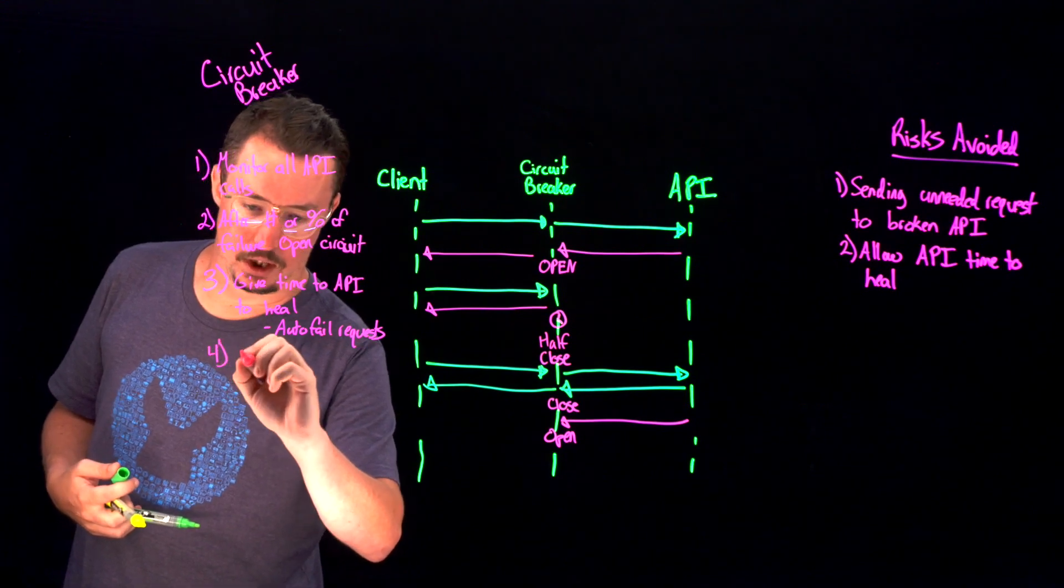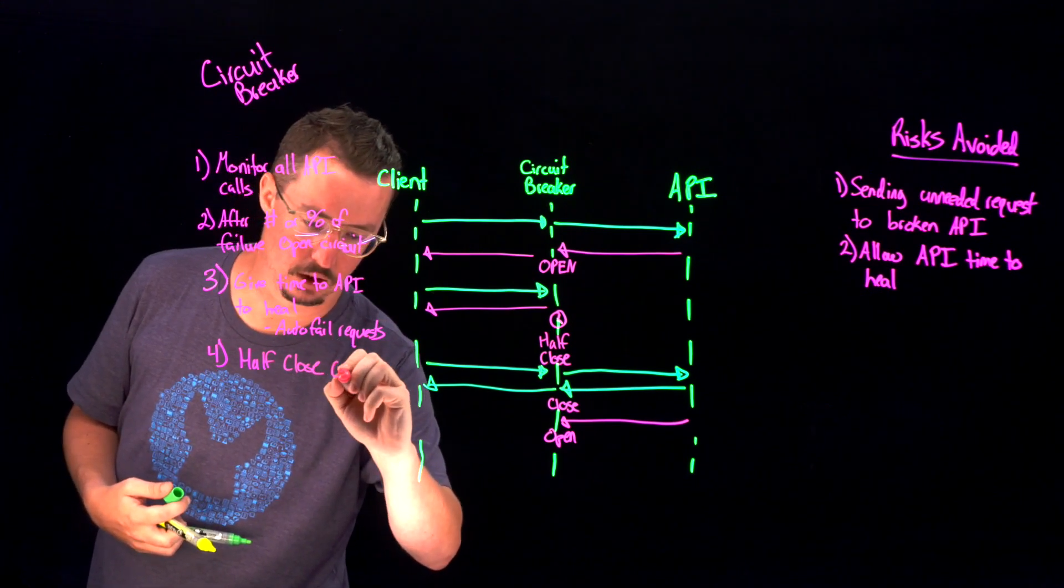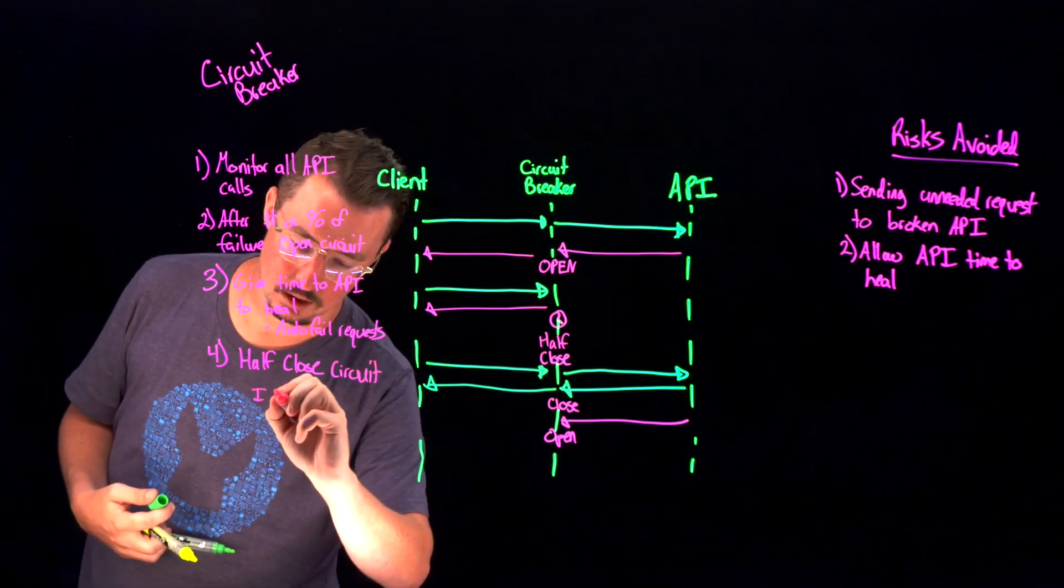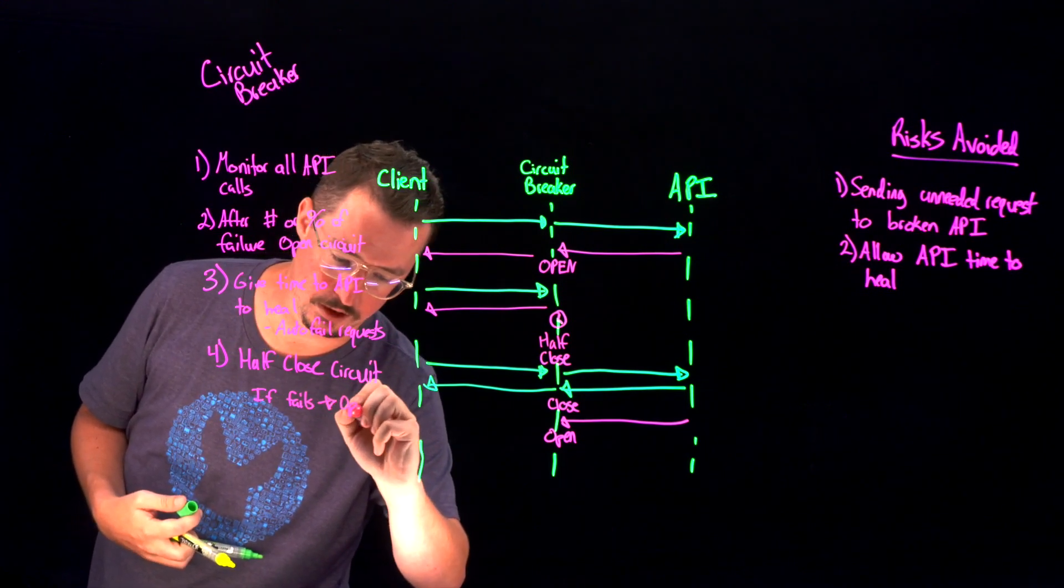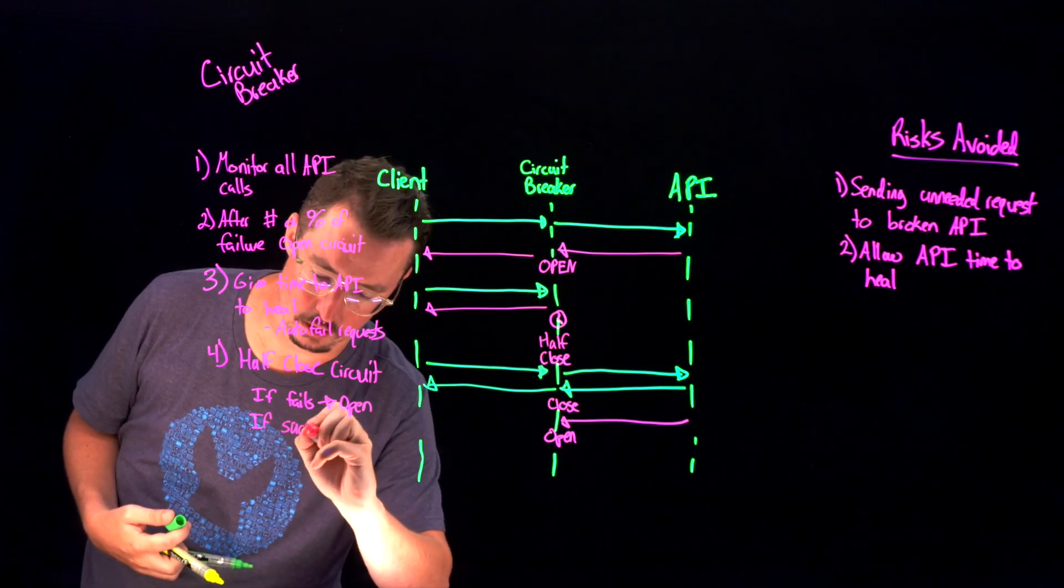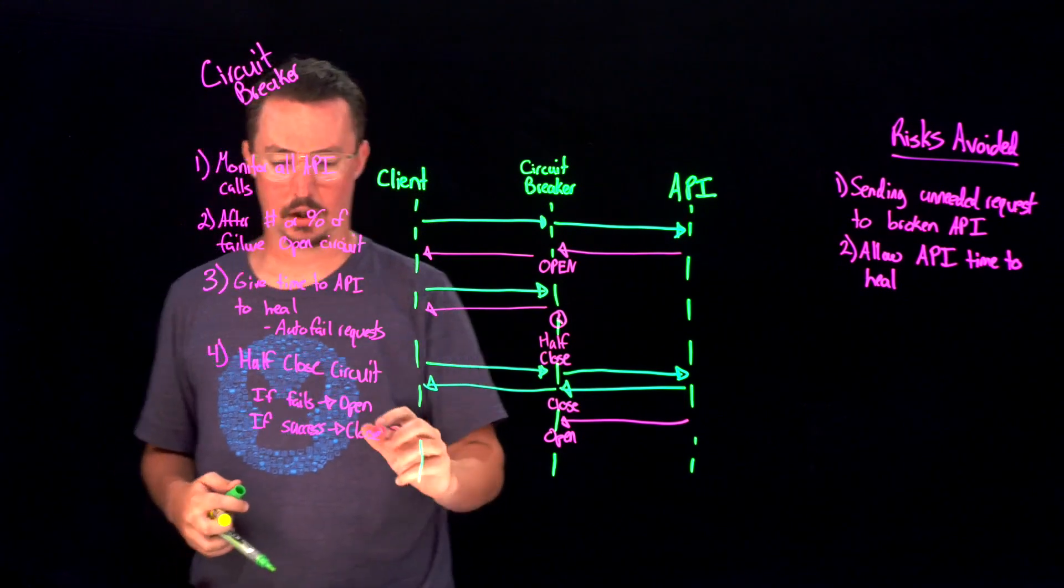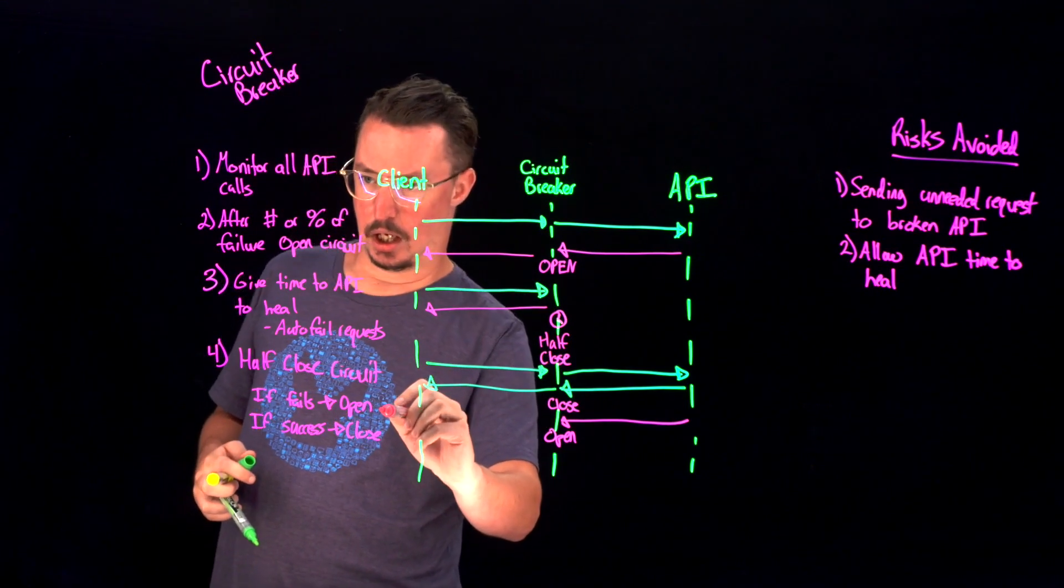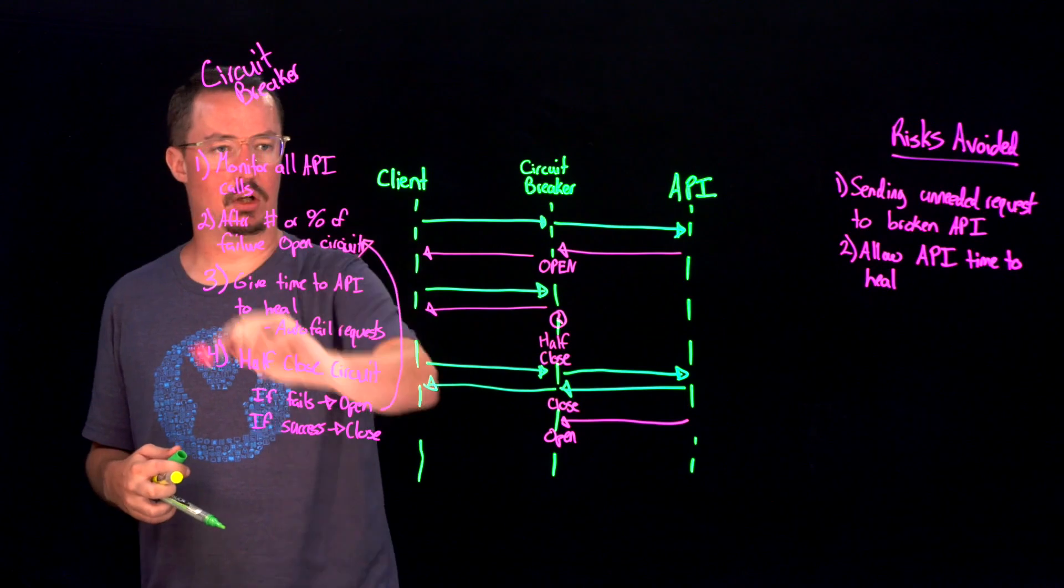So number four is we're going to half close the circuit. If it fails, we're going to open the circuit. If success, close the circuit. And again, if it fails, we're just going to go right back up to this part right here. So we're going to open it back up, and we're going to start the process all over again.